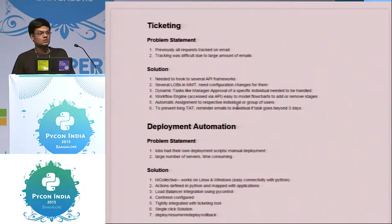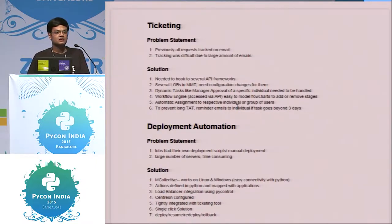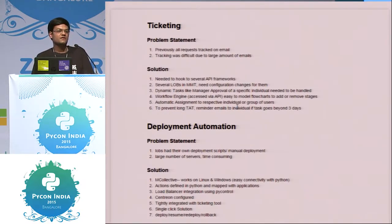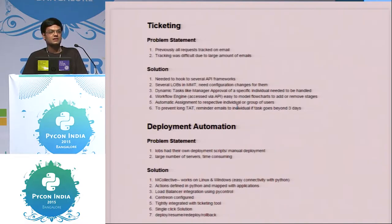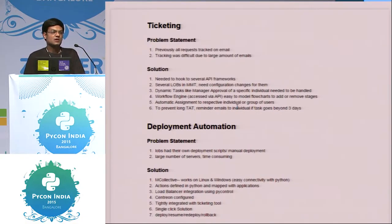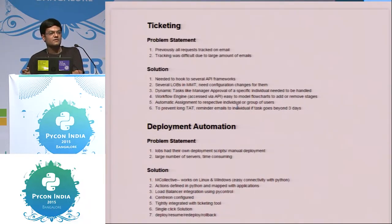The requirement for Django was that, since it was a ticketing tool, it required several configuration changes for every specific line of business we have at MakeMyTrip. There are several types of requests — a deployment request, a user ID creation request — and we had API frameworks to hook up to, so Django seemed a great place to start with.